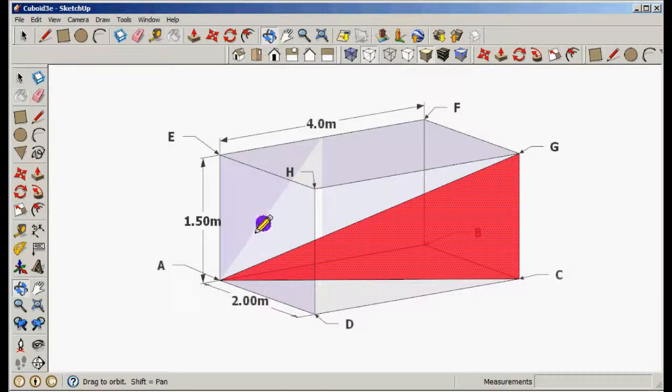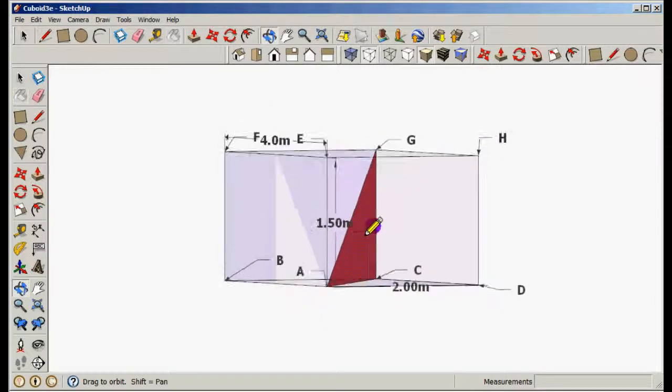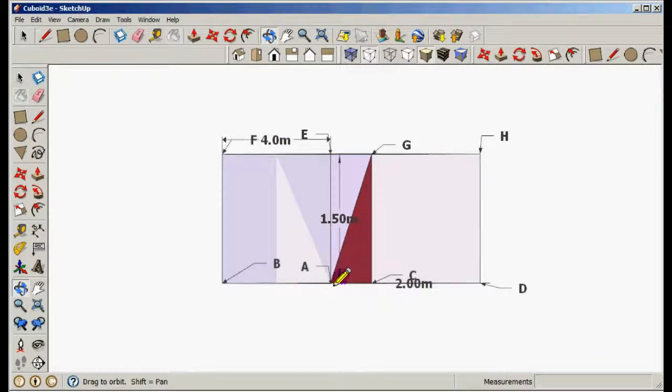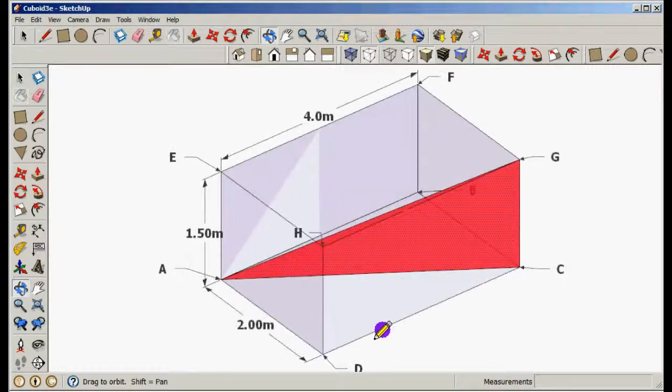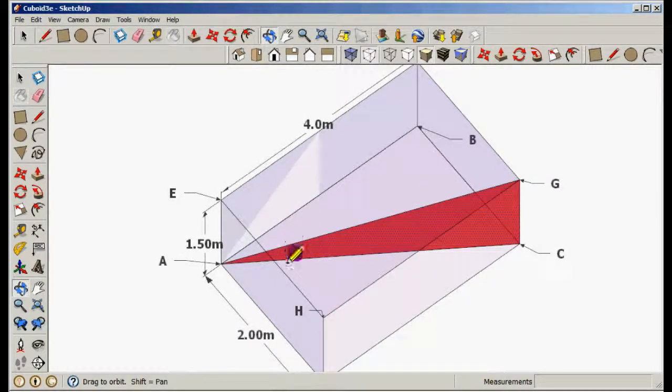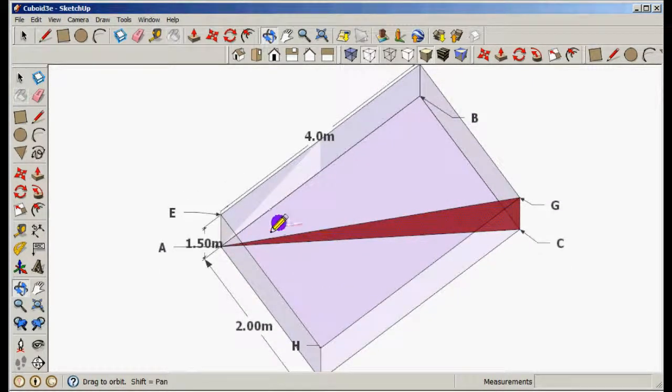If you rotate this around, you notice if we do this, the angle looks very big. And if we rotate around here and look from slightly above, then the angle gets much smaller and sharper.